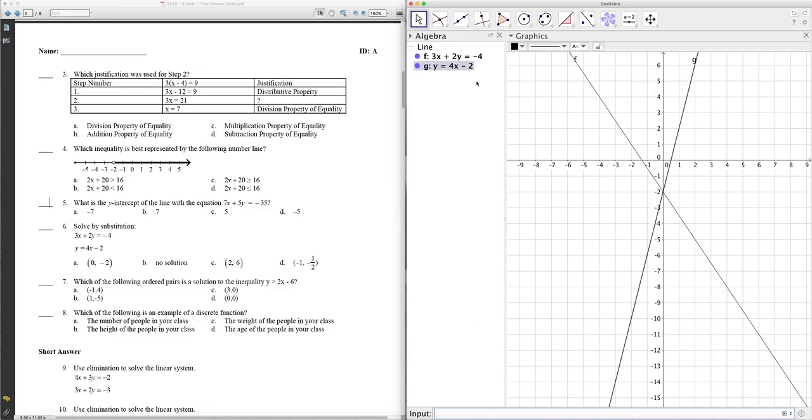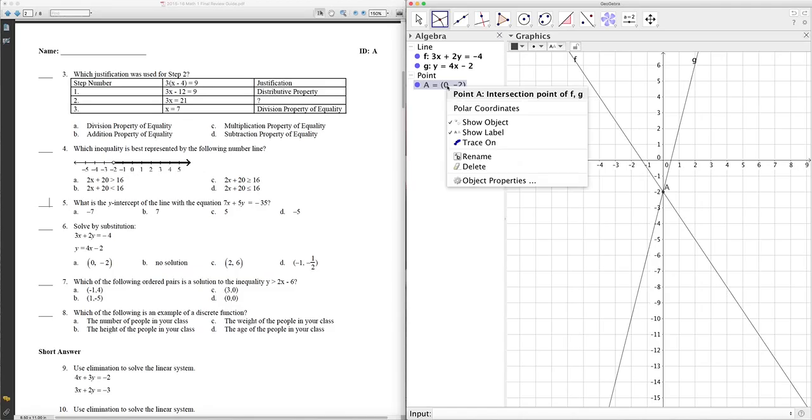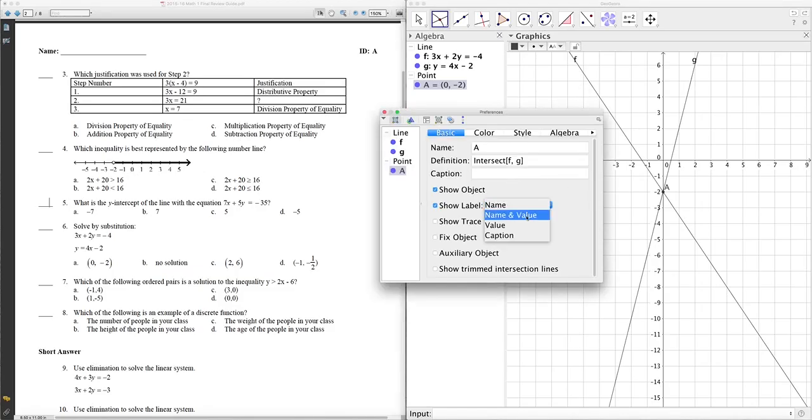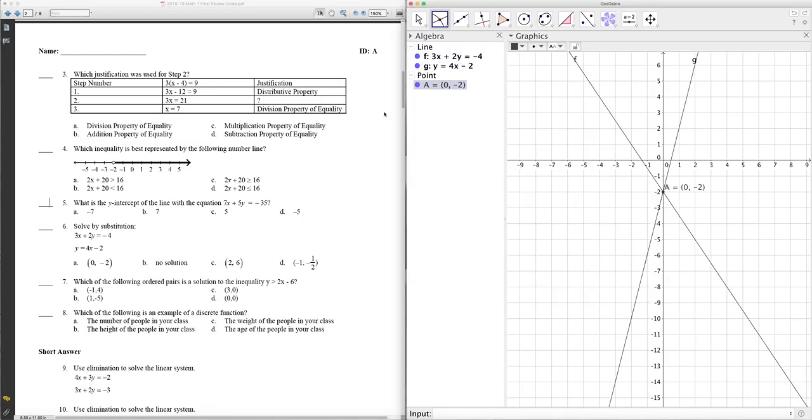So, there you have it. Now, what I notice about these two graphs is that they intersect. Wonder where that point's at. What's the coordinate of that point? So, go to my intersection tool and click there. It's called point A. I want to see that on my graph, object properties, show name and value. And there you have it. So, now I see that that point is 0, negative 2.